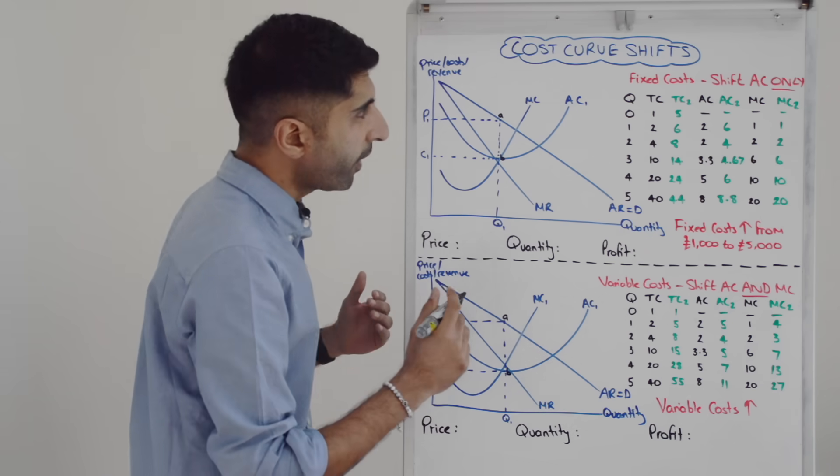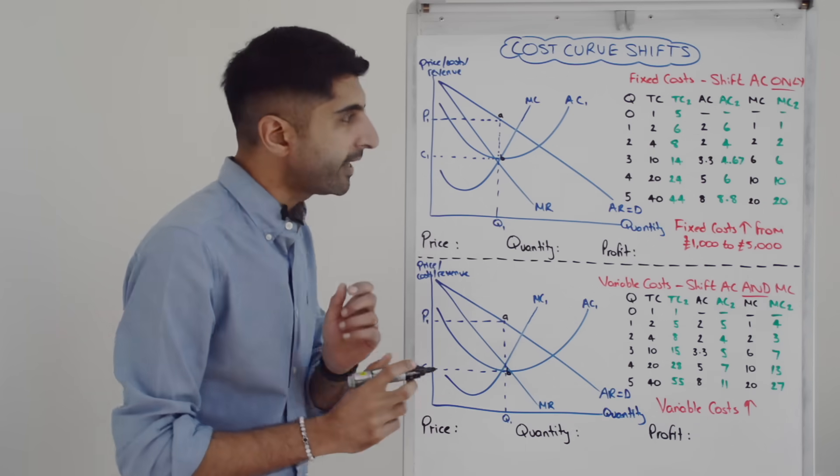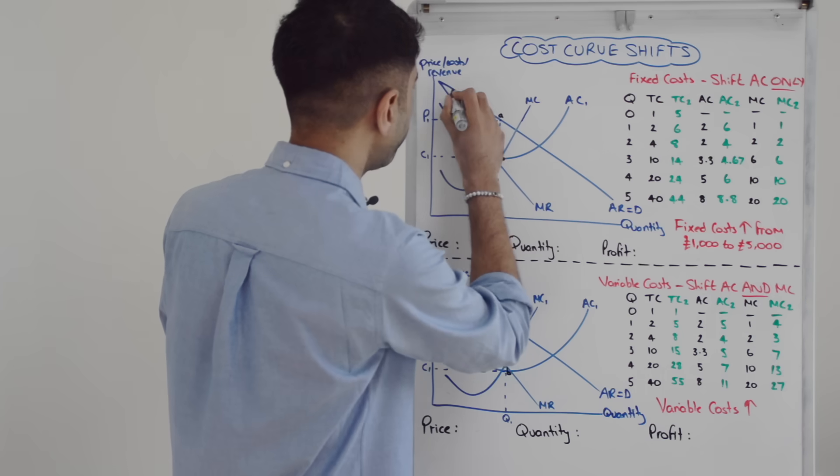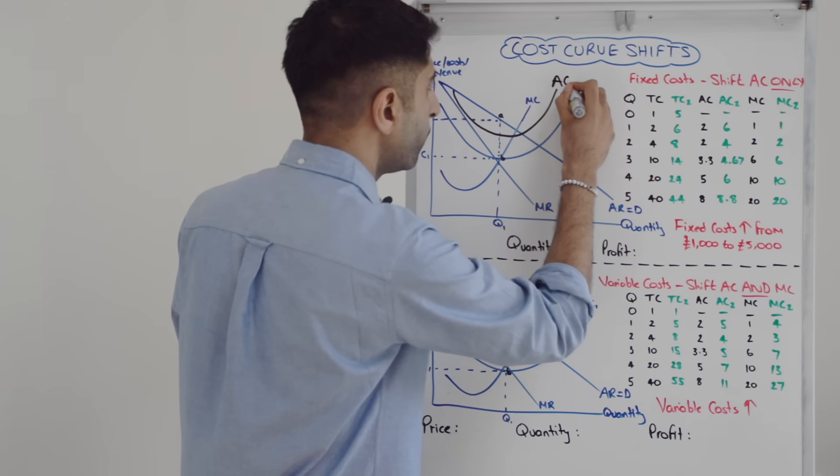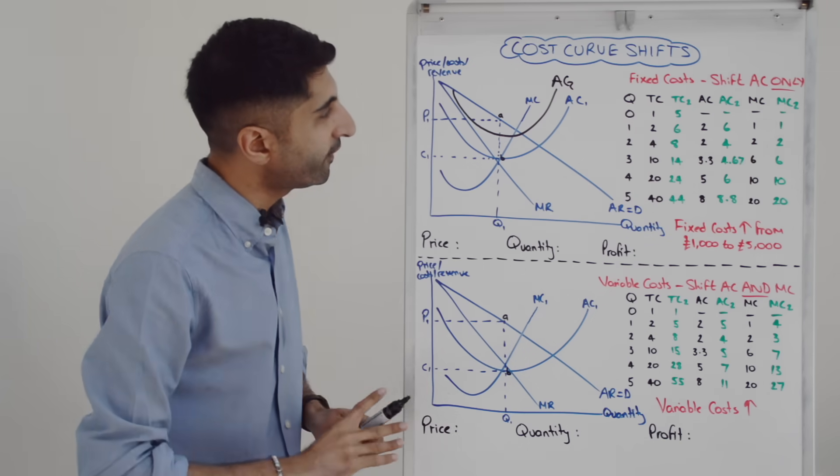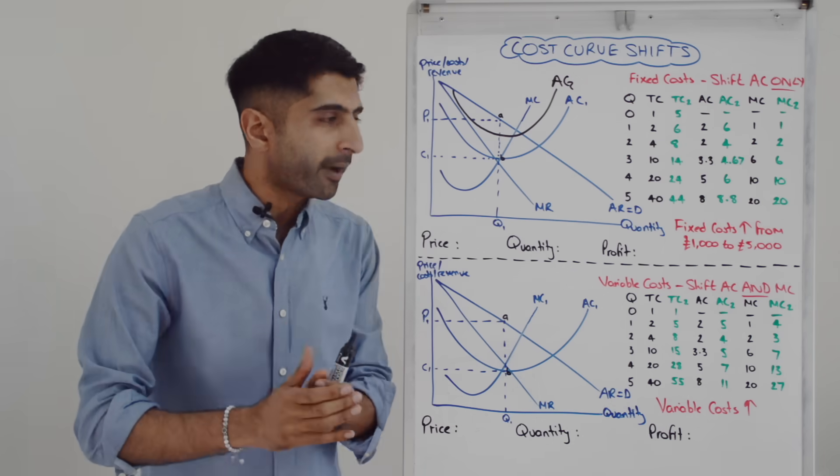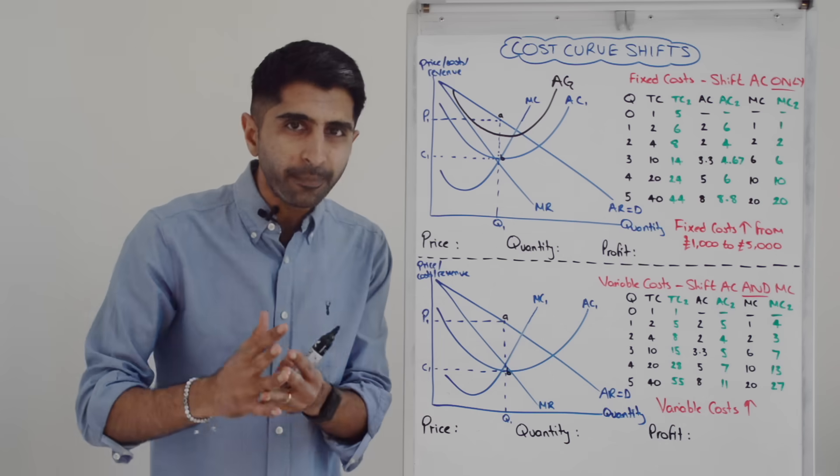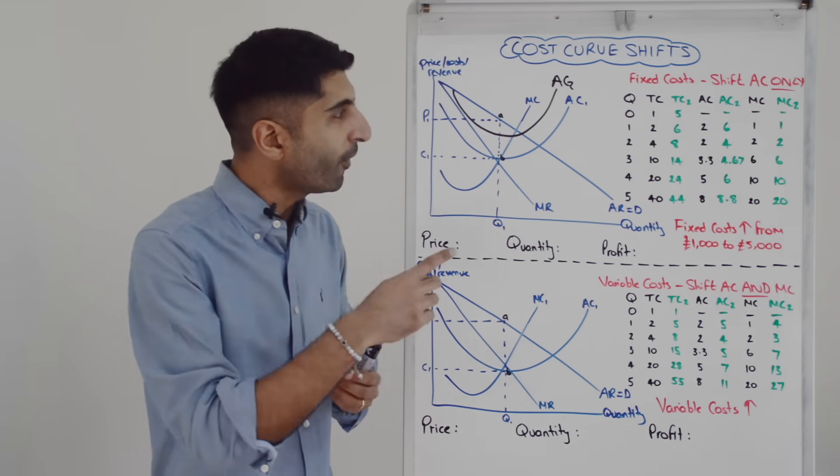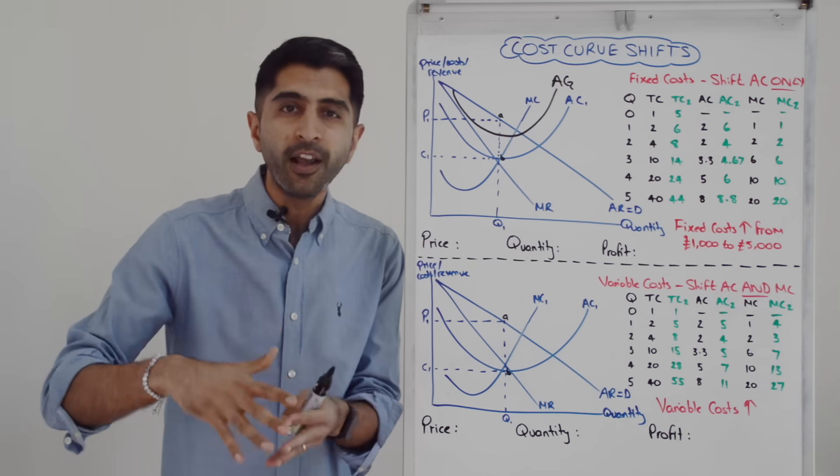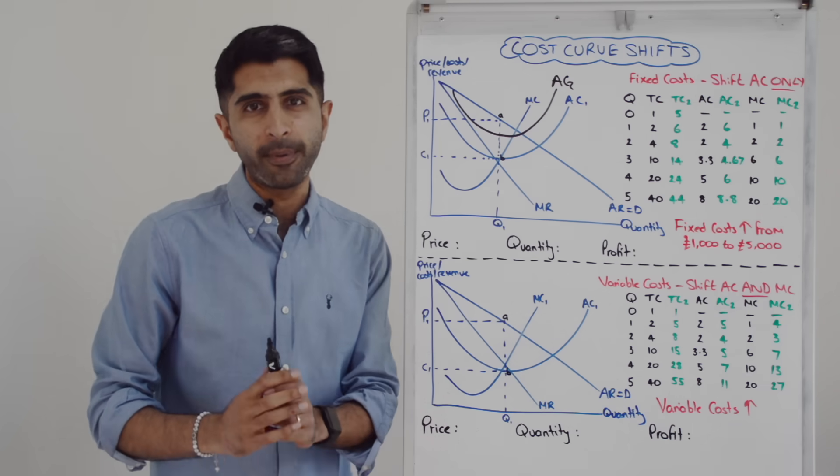So we have the original AC curve. We simply shift it up to AC2. Still, the lowest point on AC has got to cut marginal cost. And you'll see that not much has changed on this diagram. Because we've only shifted AC, the profit maximization point remains where MC equals MR in the same place, giving us Q1. We read the price at the same point on the AR curve, giving us P1. So price and quantity hasn't changed. The only thing that's changed is the level of profit being made.